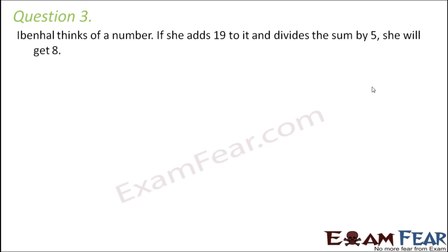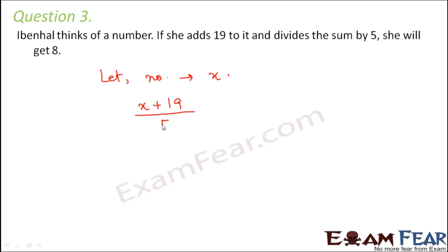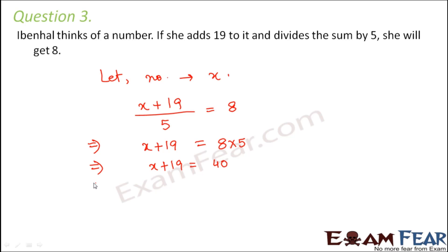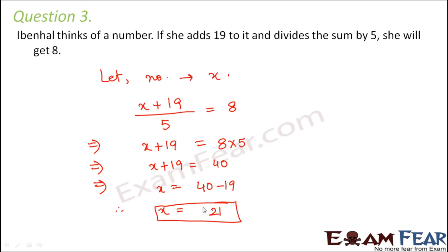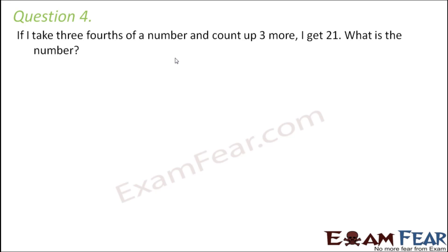Question 3: Imaher thinks of a number. If she adds 19 to it and divides the sum by 5, she gets 8. What is the number? Let the number be x. Then (x plus 19) divided by 5 equals 8. Moving 5 to the right: x plus 19 equals 40, so x equals 40 minus 19, therefore x equals 21. The number she thought of is 21.